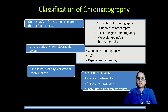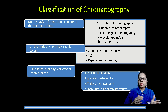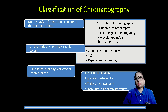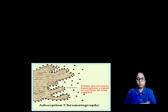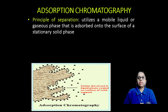Coming to the classification of chromatography, on the basis of interaction of the solute to the stationary phase, as well as on the basis of the chromatography column and the physical state of the mobile phase, they have divided it into different categories such as adsorption, partition, ion exchange, molecular exclusion, gas chromatography, HPLC, and liquid chromatography.